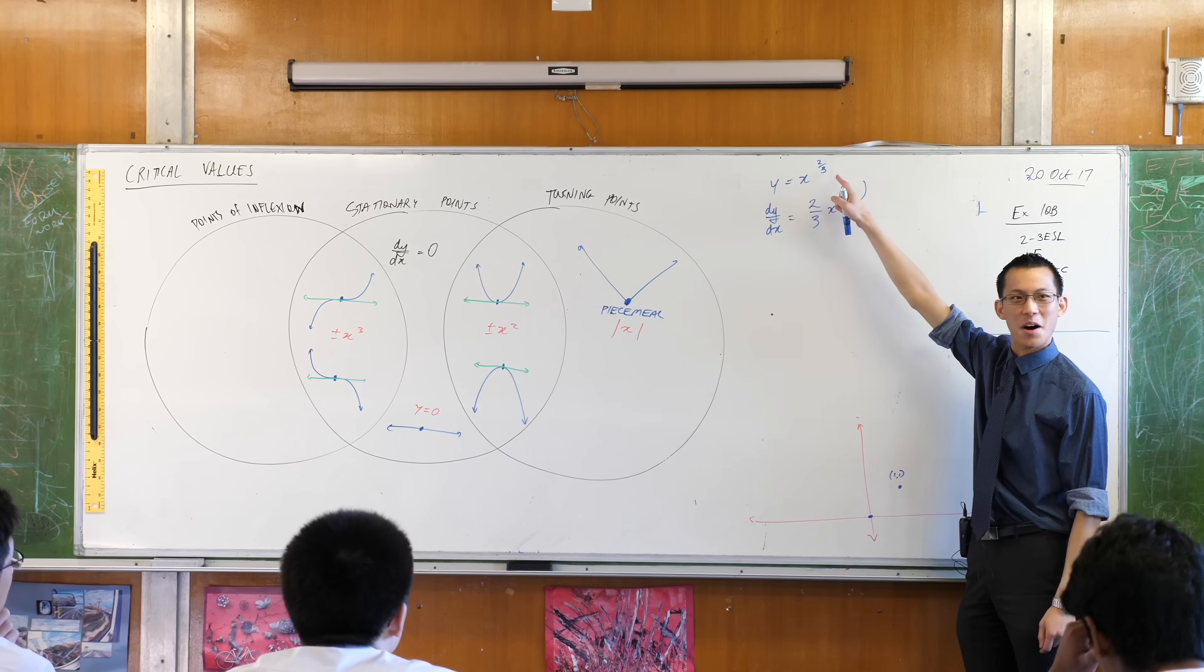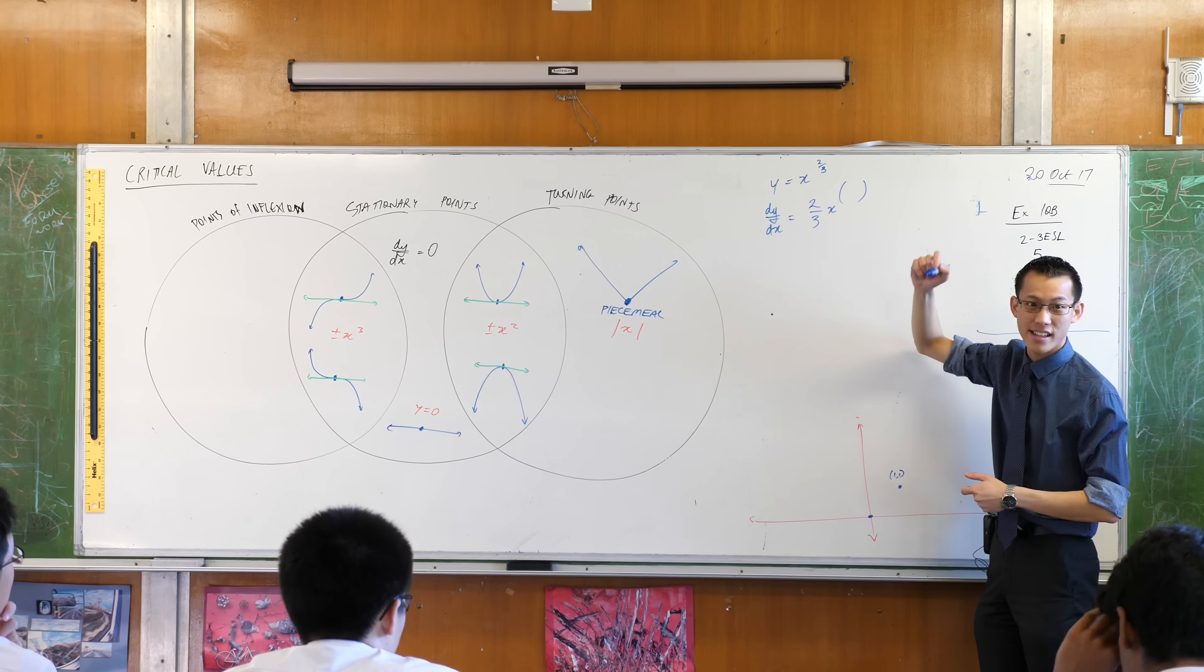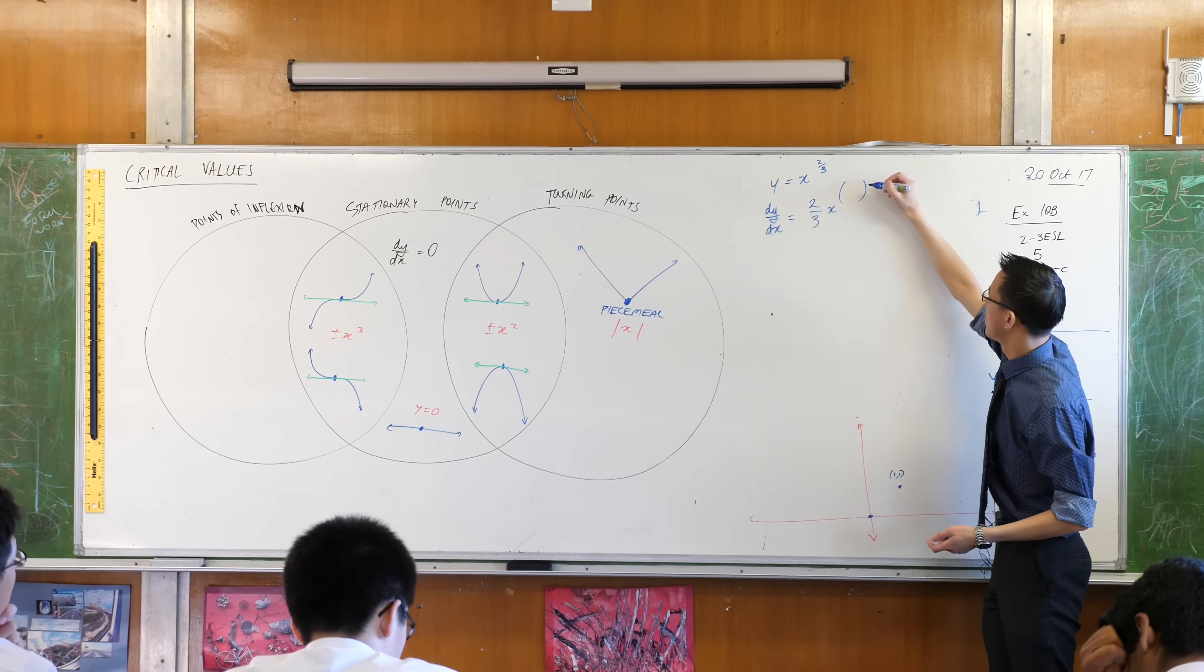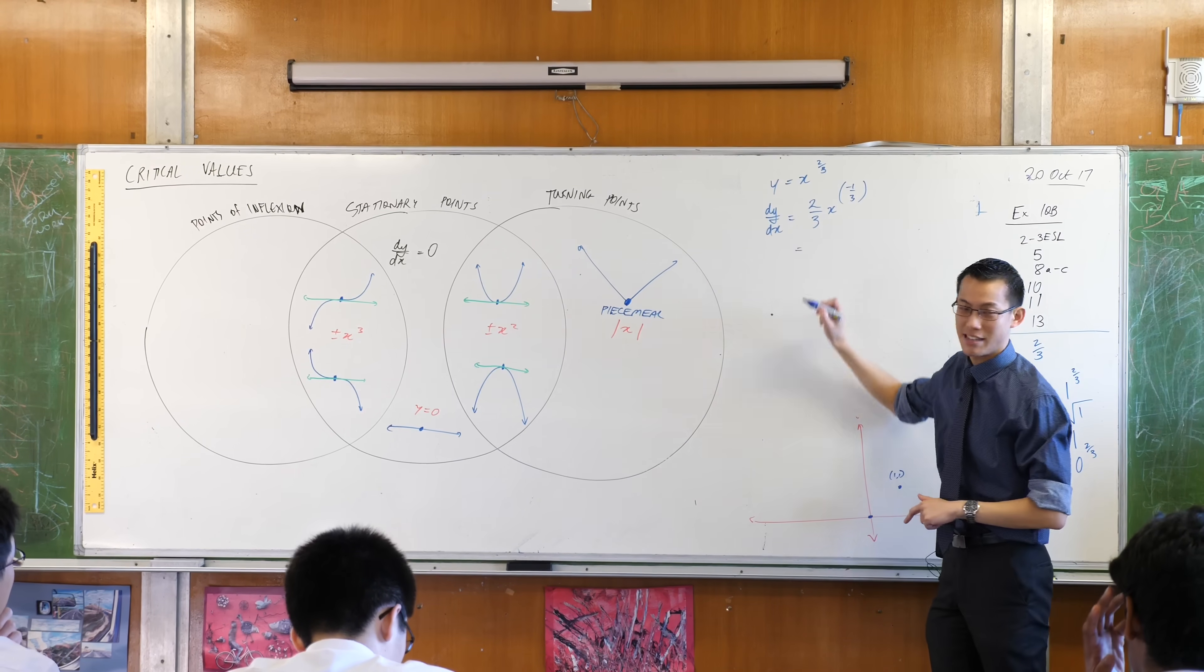Now, be careful, right? Two thirds minus one is not a third. That's a very common error. Two thirds minus one is negative a third. That's a little bit weird.